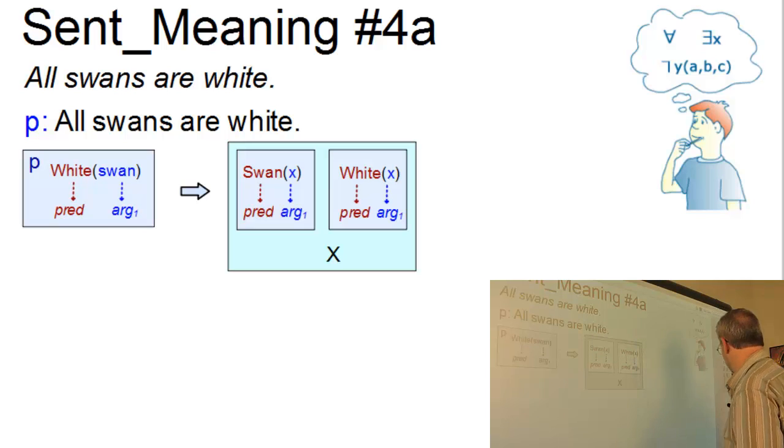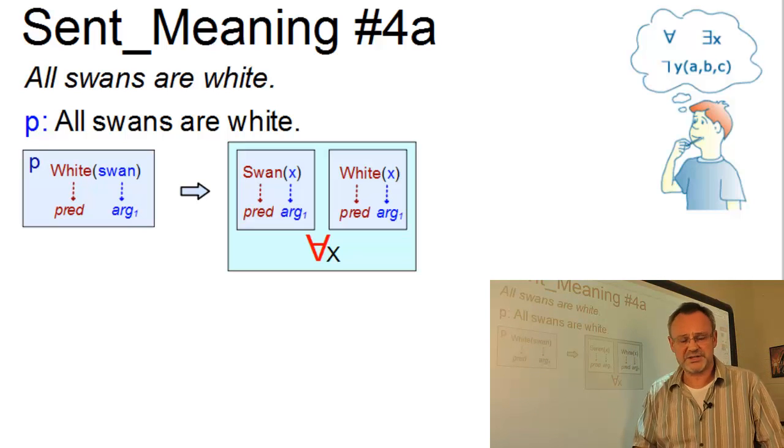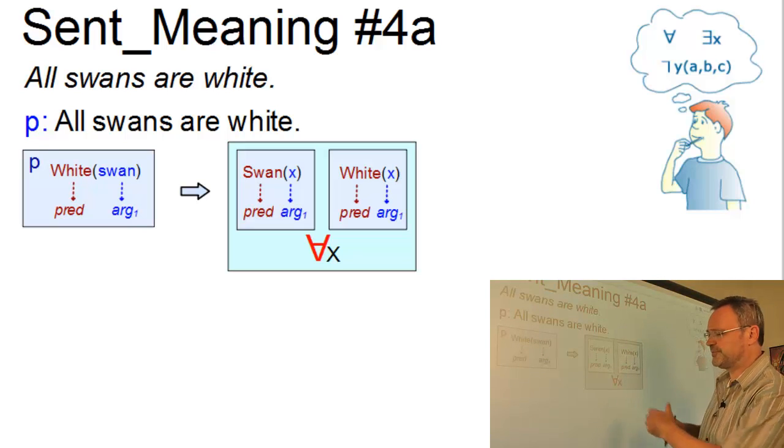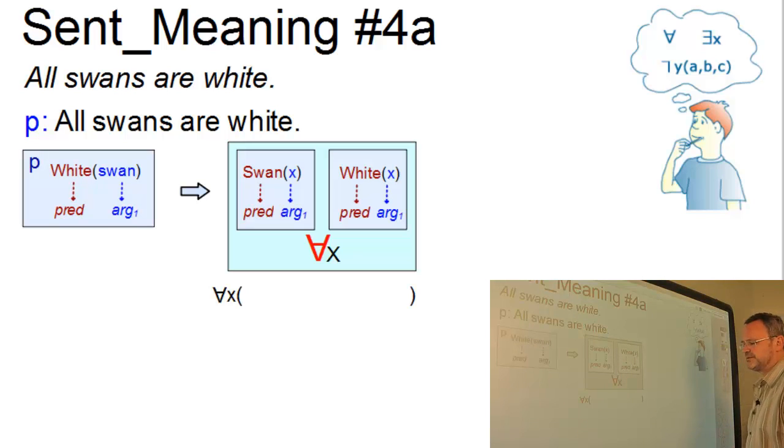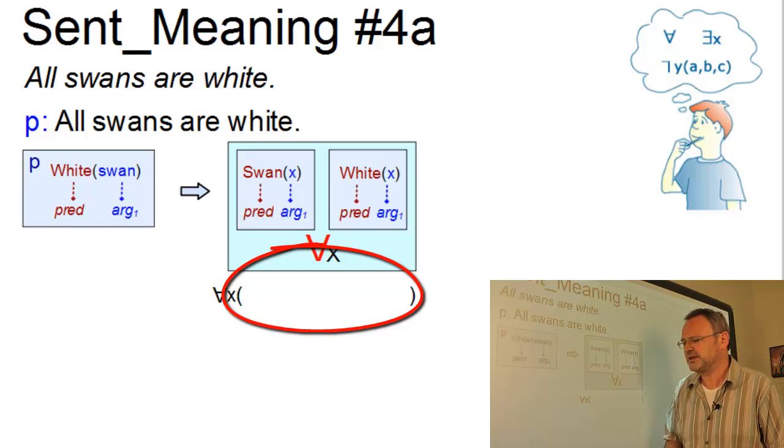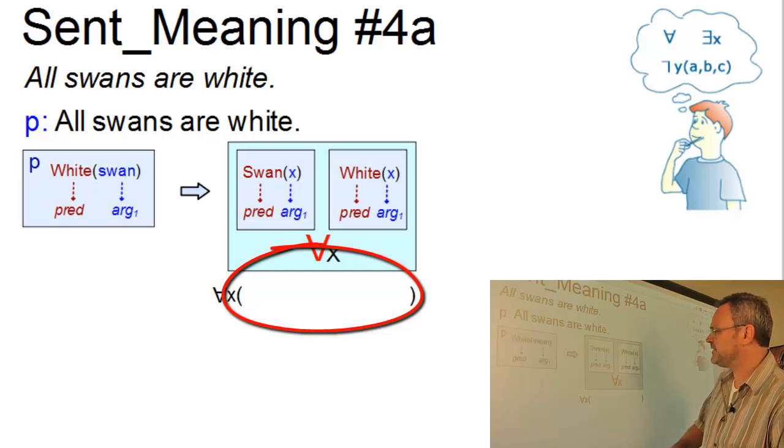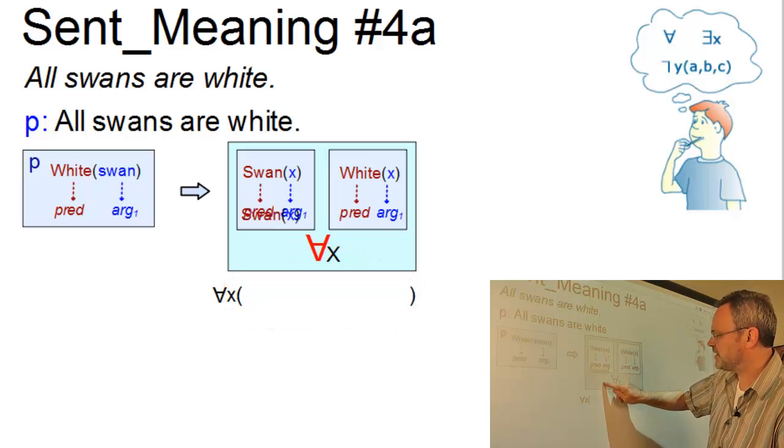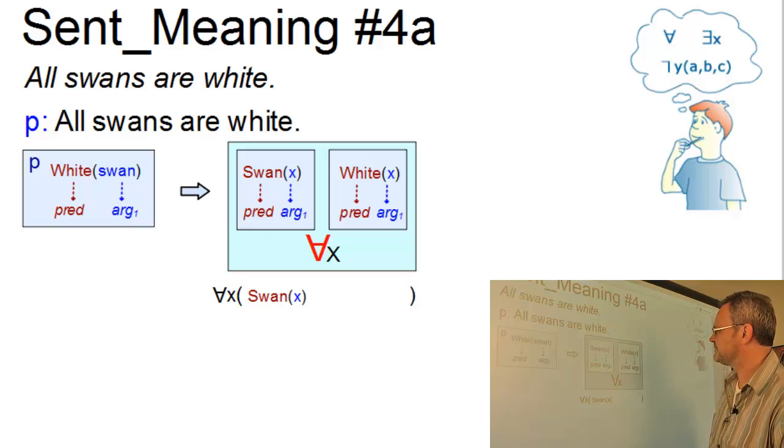And now we can apply the universal quantifier, you know, the upside down a symbol, to both predications. And the convention to do this is quite simple. Put the quantifier and its variable outside a bracket from where it combined all elements with the same variable within the bracket. Well, and these are our elements, swan x and white x.